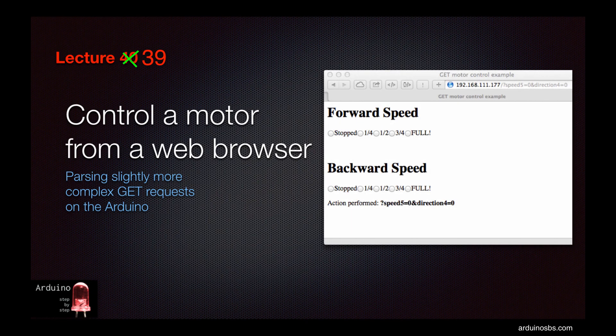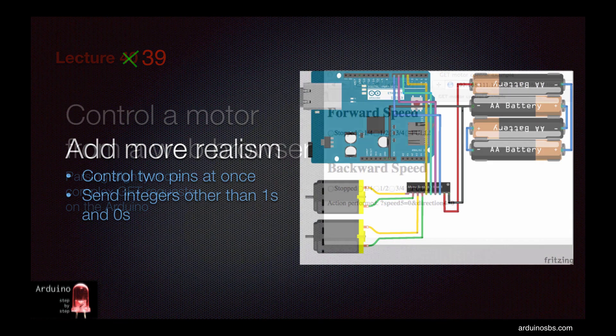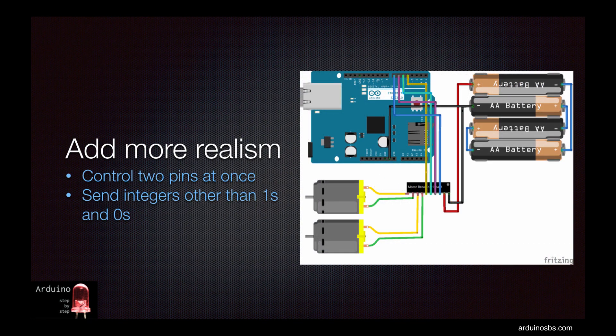Hi, welcome back. In the previous lecture, we learned about controlling the state of a digital PIN through sending GET requests with your web browser. What if you had to control two PINs at once, and if you had to send over values other than 1s and 0s? In this lecture, I'll show you how to do something like that by demonstrating how you can control a DC motor through your web browser.